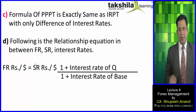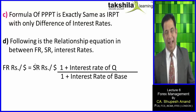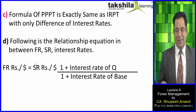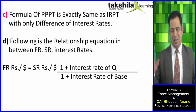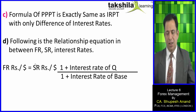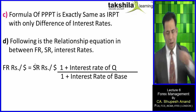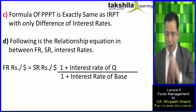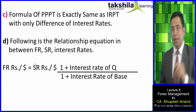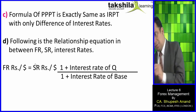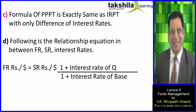The formula of Purchasing Power Parity Theory is exactly the same as Interest Rate Parity Theory, with the only difference being that interest rates replace inflation rates. Forward rate equals spot rate multiplied by (1 plus interest rate of quote currency) divided by (1 plus interest rate of base currency).